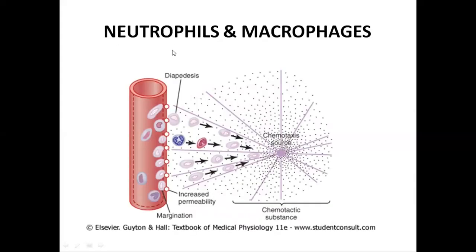How are neutrophils attracted towards the source of infection? First, margination takes place — the lining of WBCs along the wall of the blood vessel. Then diapedesis takes place, which is the squeezing of WBCs through the walls of the blood vessels. There will be increased permeability of the capillaries for WBCs, and then by chemotaxis they are attracted towards the source of infection.